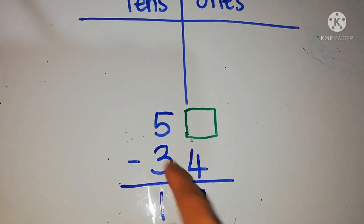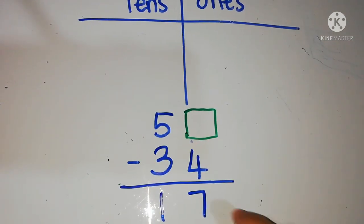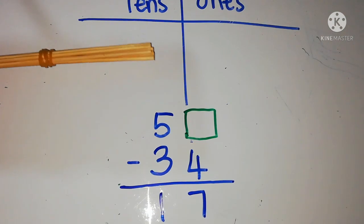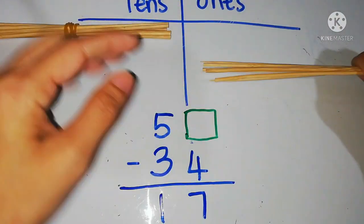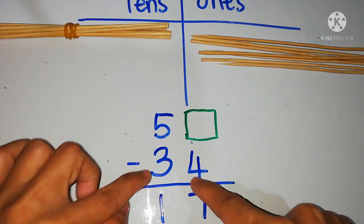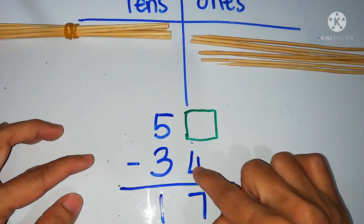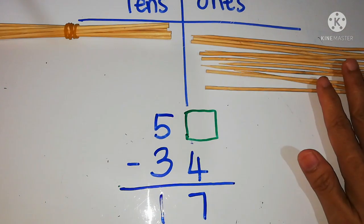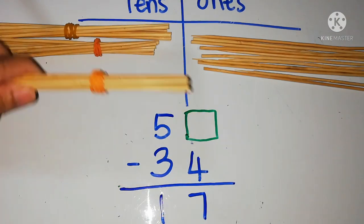The next question: what number minus 34 equals 17? To find the number in the box, we look at the answer 17. We put 1 ten and 7 ones. Then we have to add 34 back. So 7 plus 4, and 3 tens. Plus 4 here, then plus 3 tens.